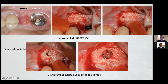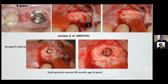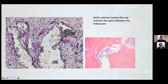Dr. Robertucci made a regeneration eight years ago and last year had the possibility to make a biopsy in this zone. When we open after eight years, it's possible to observe some white granules on the surface of the new bone. What is this material? It is the presence of the graft material in the middle of the bone — like a stone inside the bone.